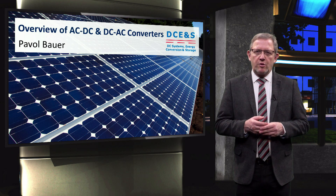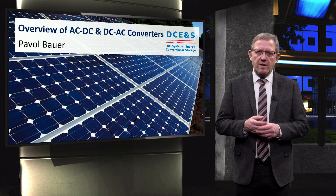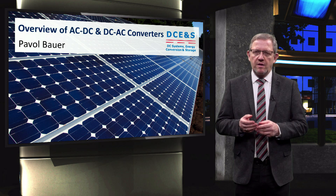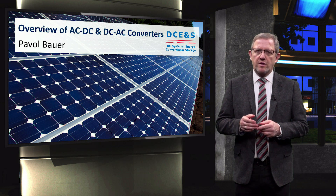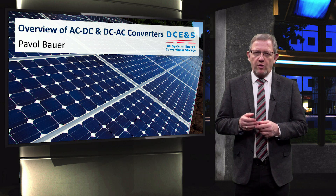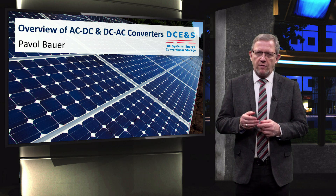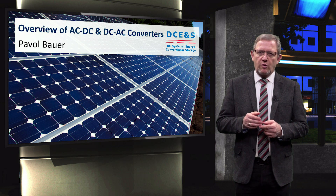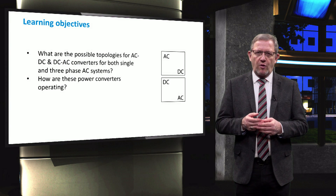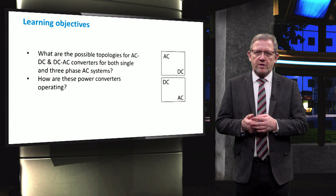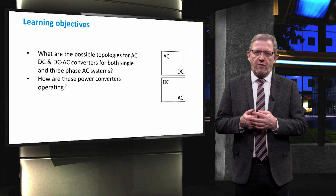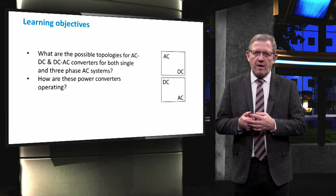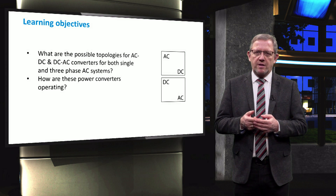Ladies and gentlemen, we introduce power electronic interfaces as important elements of AC and DC microgrids, which are in the forms of AC-to-DC, DC-to-DC, DC-to-AC, or AC-to-AC converters. In this video we give a brief overview on the conversion from AC to DC, which is rectification, and the inversion from DC to AC. The main learning objectives address two questions: what are the possible topologies for AC-to-DC and DC-to-AC converters for both single- and three-phase AC systems, and how are these power converters operating.